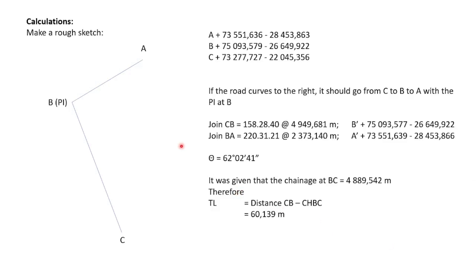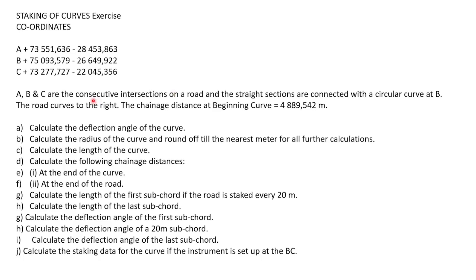Today I'm going to show you an example of how to determine your staking values or to stake a curve. This is a rough explanation — I'll walk through the steps you would follow when calculating the chainage of a road on a curve. We are given an Excel exercise where three coordinates A, B, and C are consecutive intersections on a road, with straight sections connected by a circular curve at B. The chainage at the beginning of curve equals 4889.542 meters.